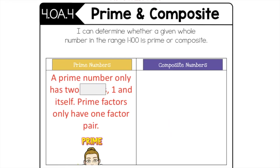Right here, I want to make sure we're seeing this side by side. A prime number only has two factors — one and itself. A prime number only has one factor pair. Remember, we did factor pairs yesterday — there's a reason we did those first. A factor pair is like a pair of socks. You have two factors: two times one is a factor pair, and a prime number only has one factor pair — one and itself.